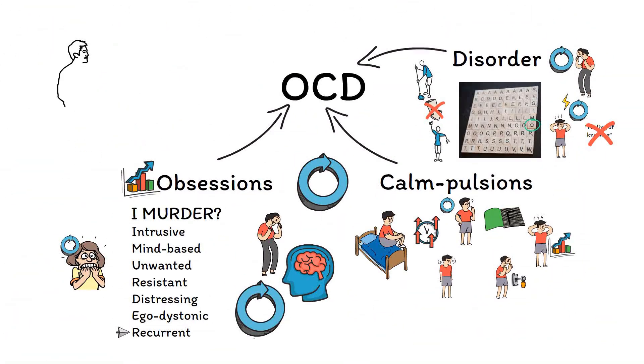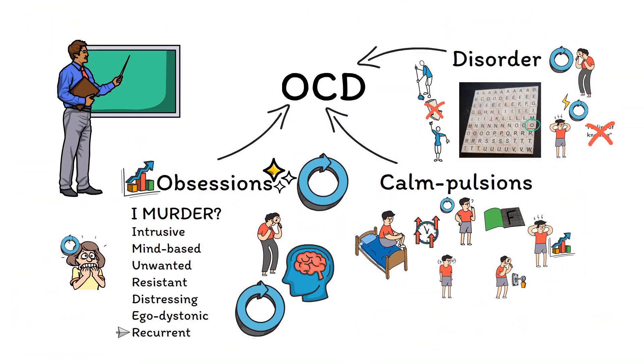Okay, let's recap what we've learned. OCD is defined by three things: obsessions, compulsions, and the disordered loop between the two.